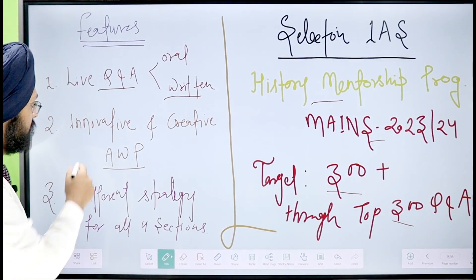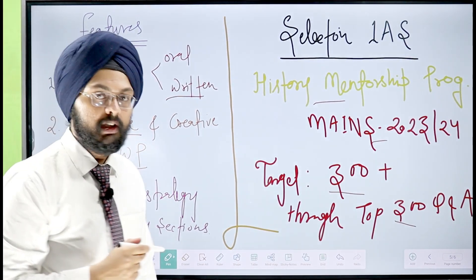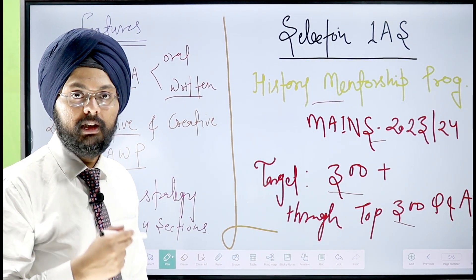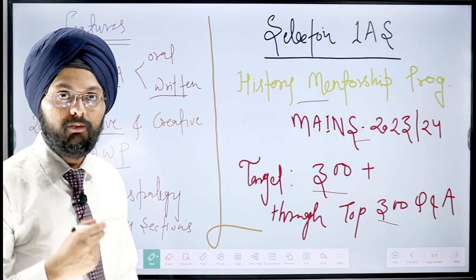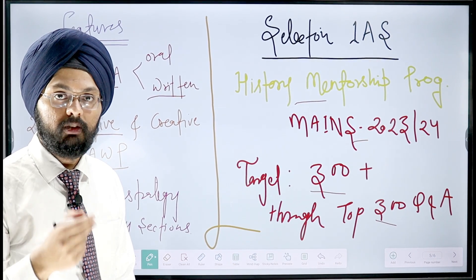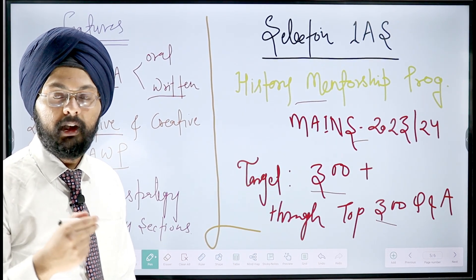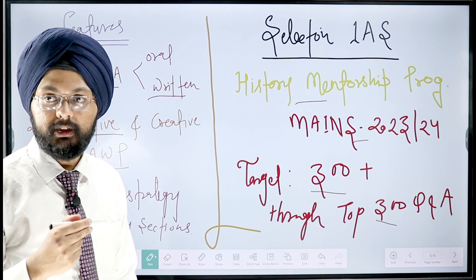Another important feature is their innovative and creative answer writing program. Friends, many coaching institutes tell us that history is a static option with no much scope for innovation. But in history also you can innovate through your maps, innovative slogans, and other things, and it can make your answer look more attractive to your examiner.